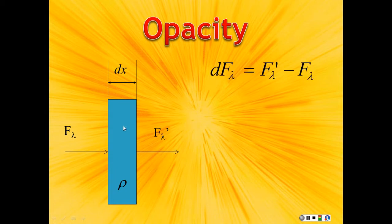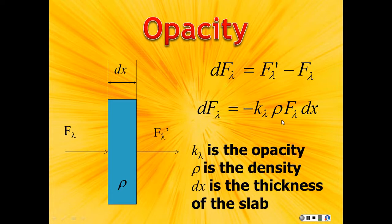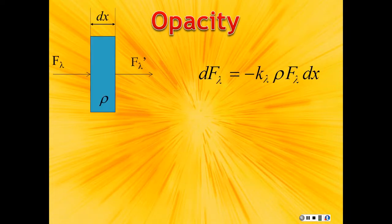And at the other side, we will have F′. So, the change in flux as a result of going through the slab is dF, which is given by F′ minus F. And that will depend on path length, dx, the density, ρ, and the intrinsic properties, opacity of the material, and the original flux, F.